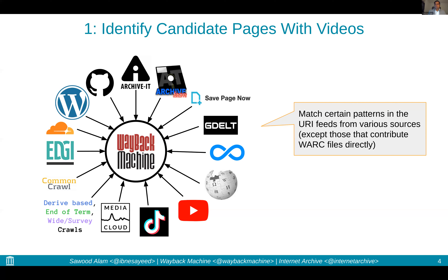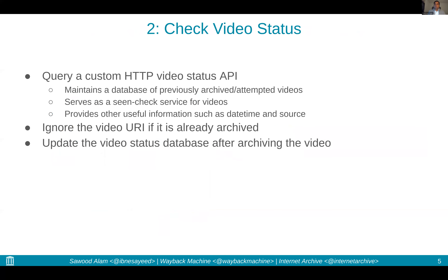Such URLs are then processed in a separate pipeline using different methods. For that, we first check each video for its status in our HTTP API that is built for video status. It serves as a scene check service, and it provides useful information such as date and time when the video was first archived, and which source triggered that archiving activity. We ignore the video URI if it is already archived; otherwise, if we do end up archiving the video, we update the database.